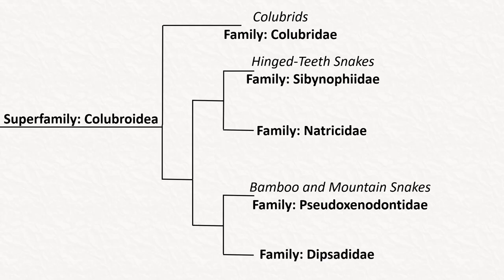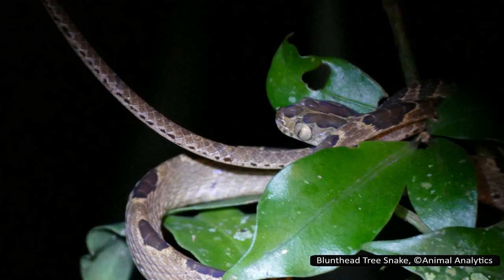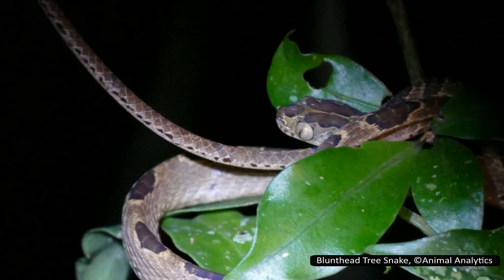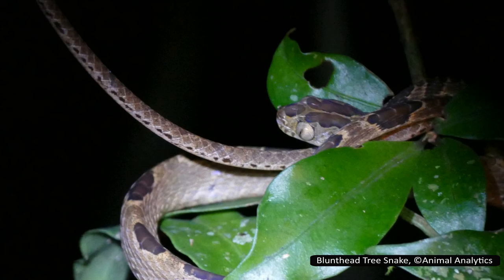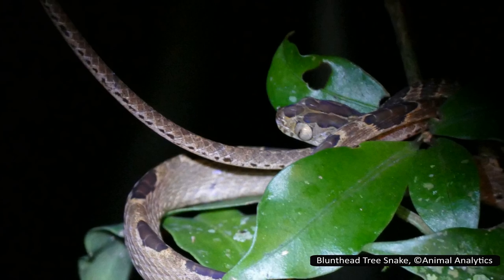The last family, Dipsadidae, is a massive one containing over 100 genera with over 800 species, found in the Americas and most diverse in South America. Many eat frogs and lizards, some will eat mammals and birds, and certain genera specialise in slimy prey — not only frogs, but also earthworms, snails, and slugs. Almost all species are harmless to humans, although a few can inflict painful bites. Sometimes this family is further divided into two families to differentiate between those found in Central America versus South America.